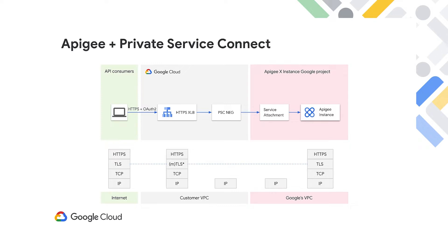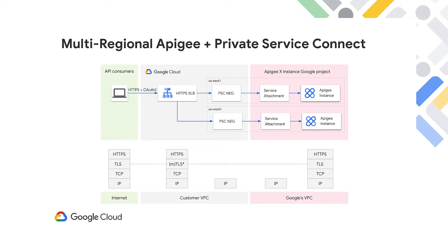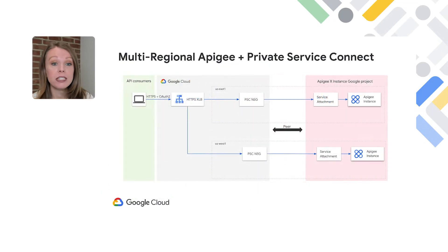PSC NEGs are configured to point to these service attachments, and API calls from the internet can be routed through the global HTTPS load balancer and the PSC NEG to Apigee. When you have multiple Apigee instances in different regions, you can use the global external HTTPS load balancer and PSC NEGs to route traffic to the nearest Apigee region or seamlessly failover from one region to another in the event of a regional outage.